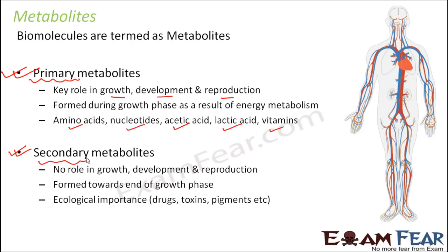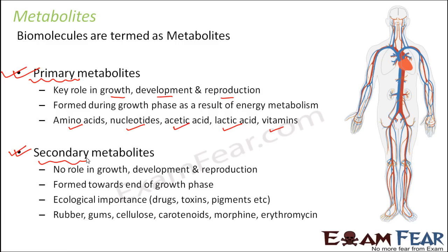Secondary metabolites are used in producing drugs, toxins, and pigments. For example, pigments like carotenoids, or drugs like erythromycin, are all produced from secondary metabolites. Some examples include rubber, gums, cellulose, carotenoids, morphine, and erythromycin. Carotenoid is a pigment responsible for the orange, red, and yellow colors seen in plants — in the color of fruits and flowers — and it is a secondary metabolite.